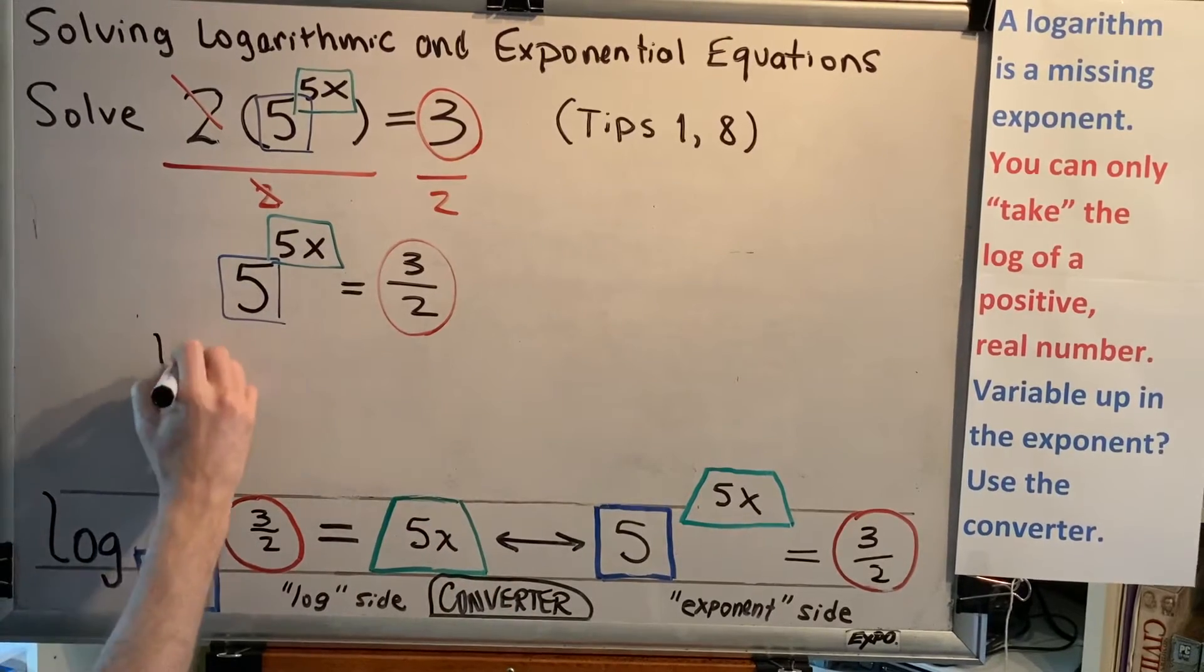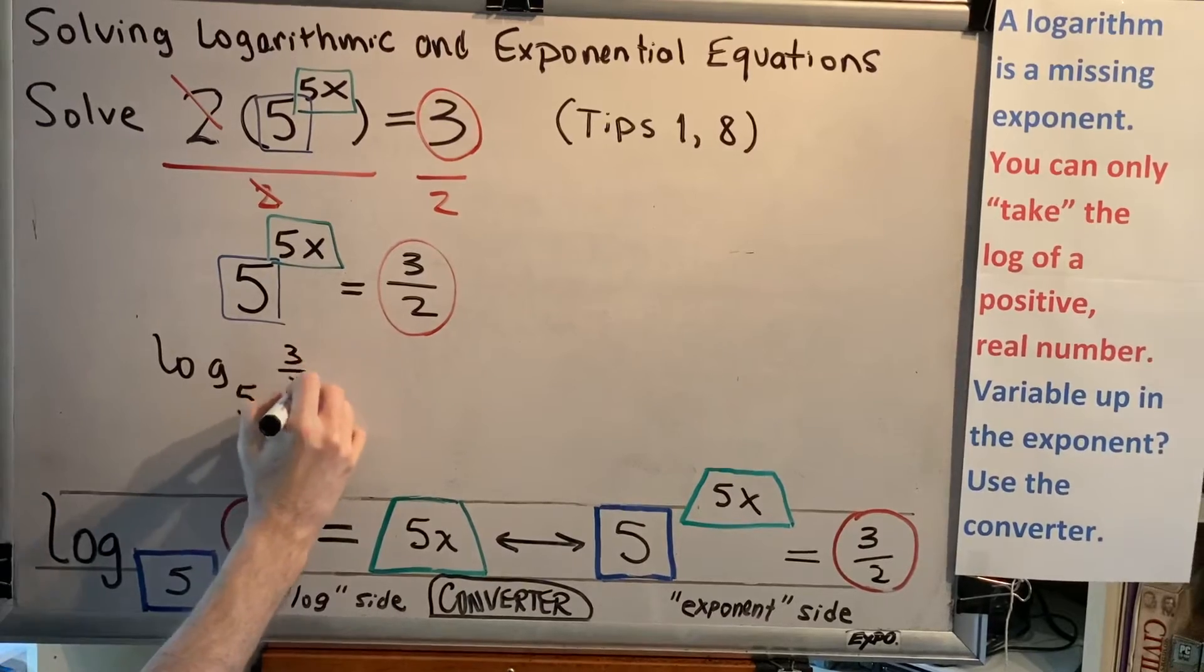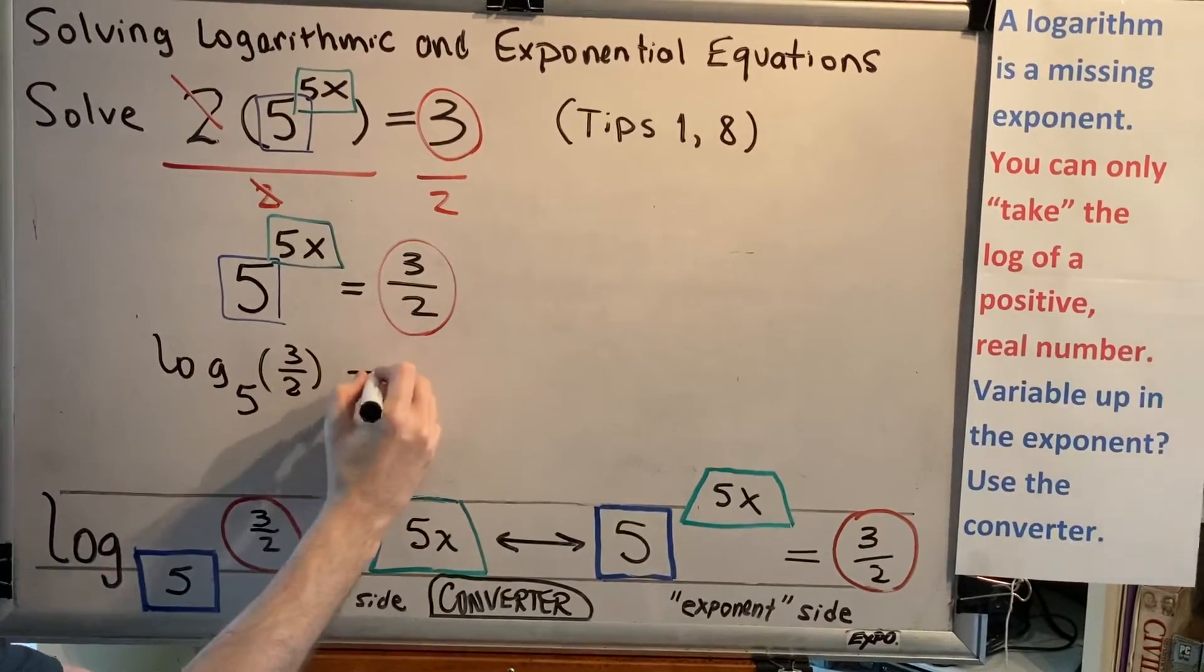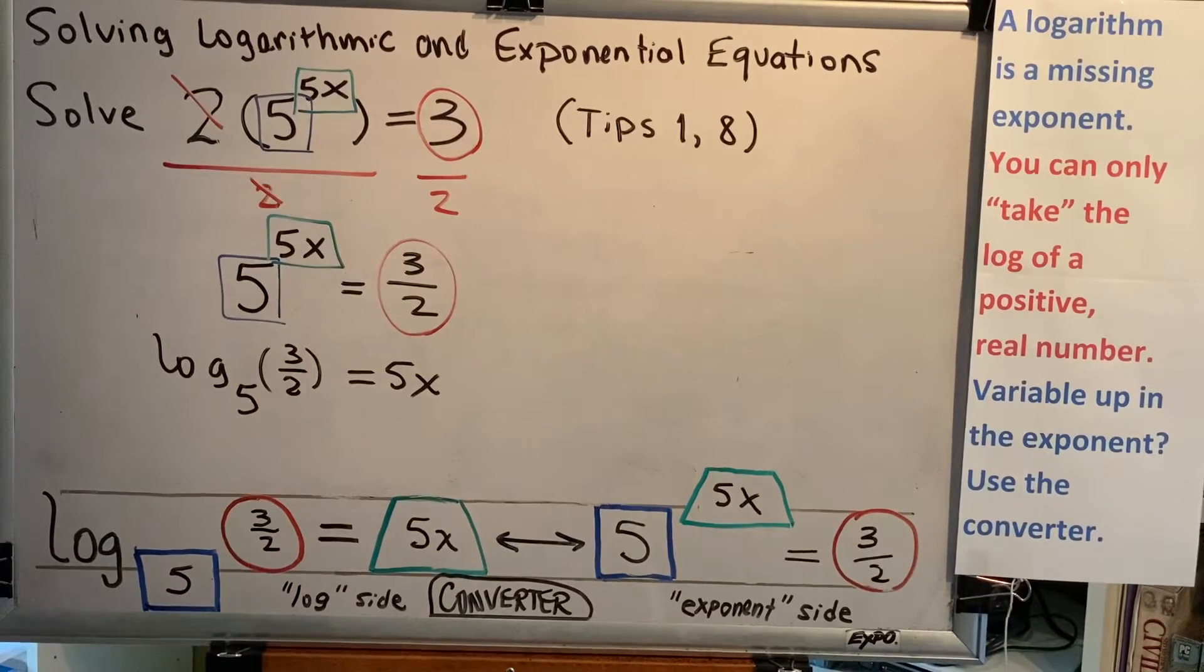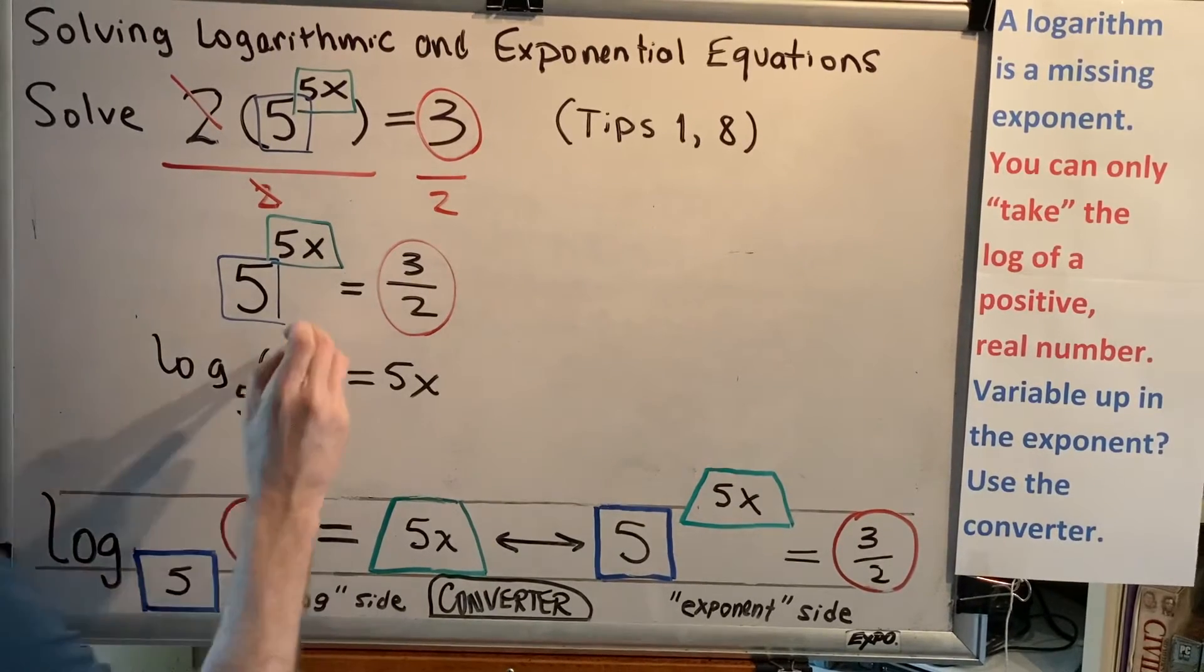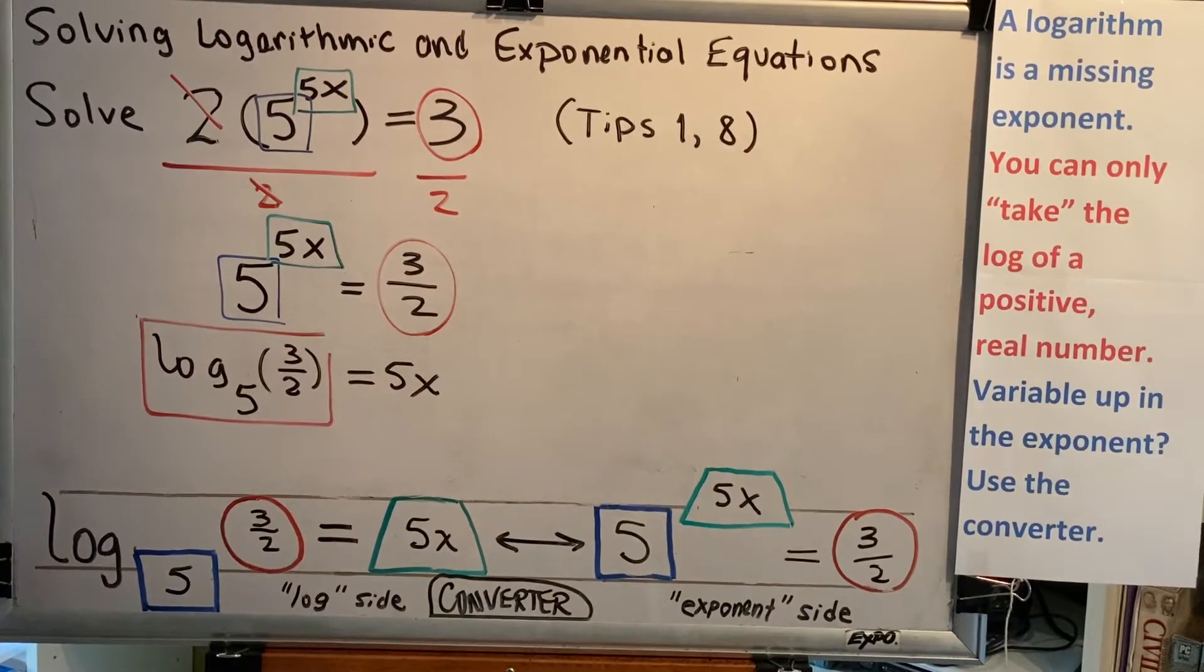So we can now write this statement: log base 5 of 3 halves equals 5x. This is a good time to remind ourselves that each log has a brick. And nothing outside of that brick can affect anything inside of the brick.